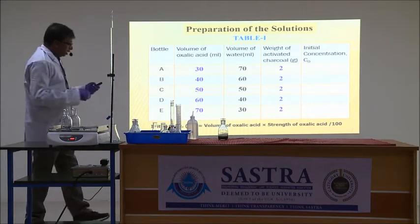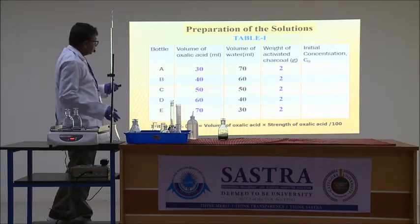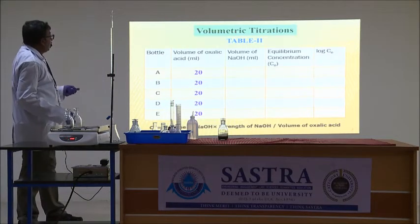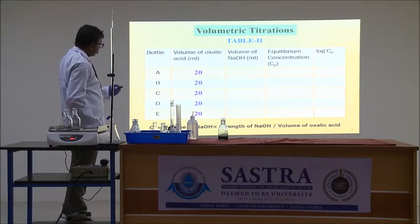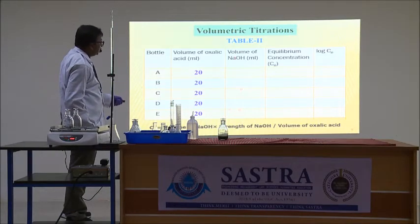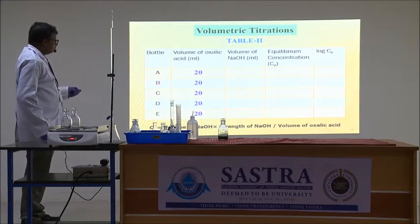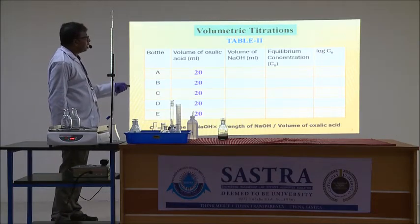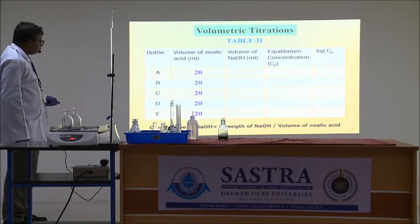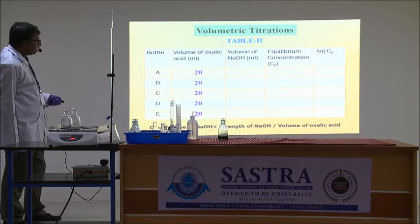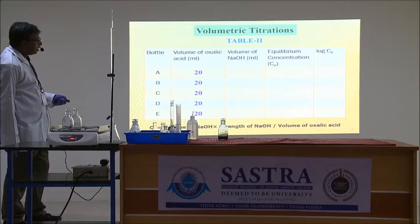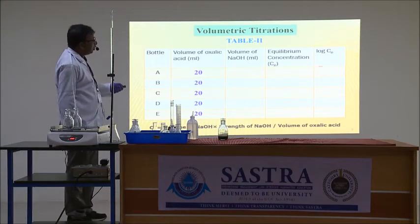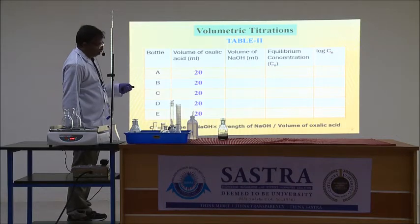For all the solutions, we obtain concordant titration values. Using these values, we calculate the equilibrium concentration CE using the formula: CE = (volume of sodium hydroxide × strength of sodium hydroxide) / volume of oxalic acid. Subsequently, we can also calculate log CE.